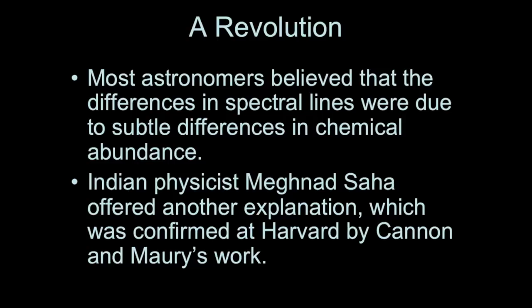However, the best explanation for the differences in the strengths of the absorption lines came from an Indian physicist named Saha. He developed a thermal ionization theory that allowed astronomers to understand why some absorption lines appeared stronger and some appeared weaker depending on the temperatures of the atmospheres of stars. So, Saha was the first person to do this and then to apply it to stellar atmospheres.